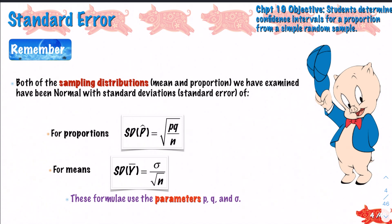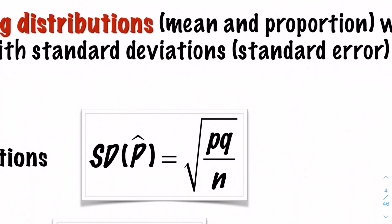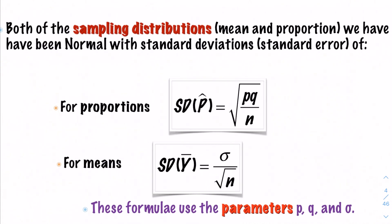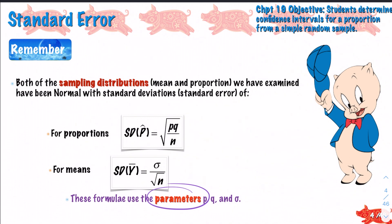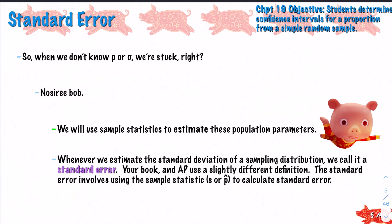If you remember what we talked about in Chapter 18, both sampling distributions we examined - means and proportions - have been normal. The standard deviation for our sample proportion is the square root of pq divided by n, and the standard deviation for the sample mean is sigma divided by the square root of n. Both use parameters pq and sigma - those are the true population parameters. So what happens when we don't know p or we don't know sigma?